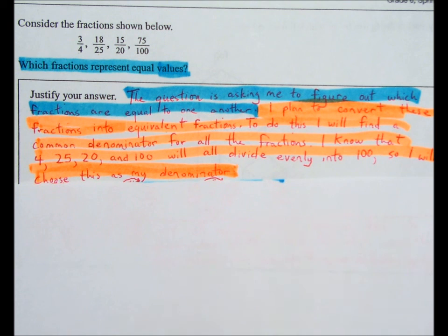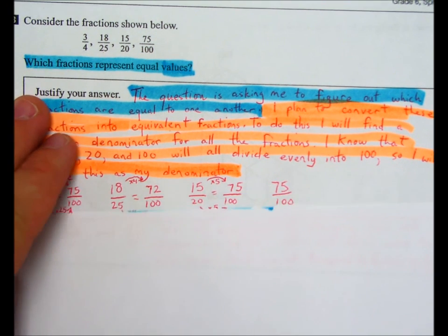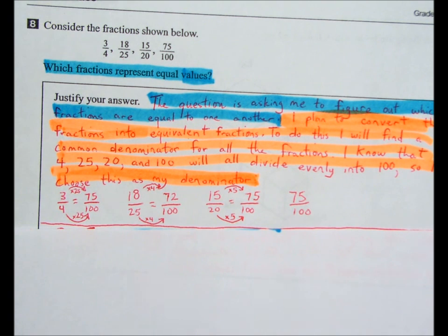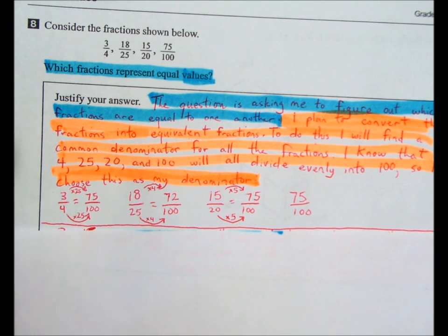Next, I'm going to carry out my plan because that's step three. So step three is show your calculations, show how you got the answer. And so what I did here is I took three-fourths. I made it equivalent to something over 100.